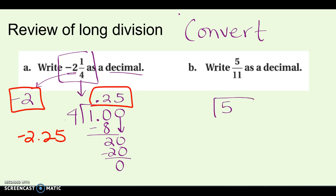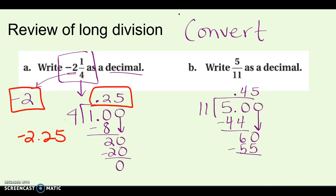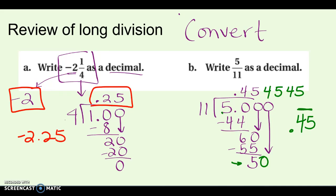5 elevenths means 5 divided by 11. 11 doesn't fit into 5, so add a 0 and decimal point. 11 into 50 goes 4 times — that's 44, remainder 6. Bring down a 0: 11 into 60 fits 5 times, giving 55, remainder 5. Bring down another 0 and now I'm looking at 11 into 50 again — that's where I started. There's a repeating pattern, so I can stop and put the repeating bar over the answer to show it keeps repeating.